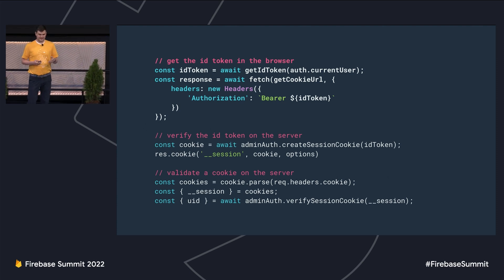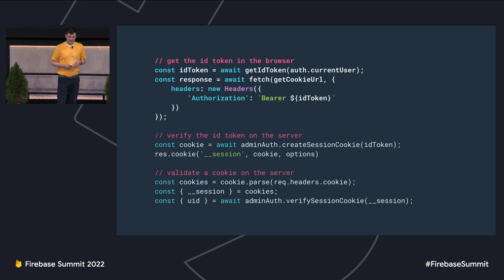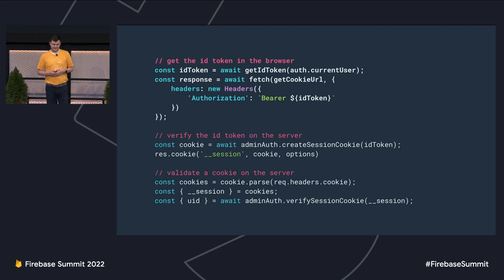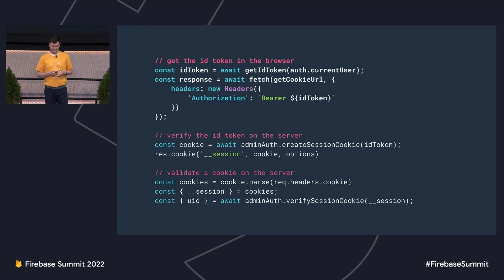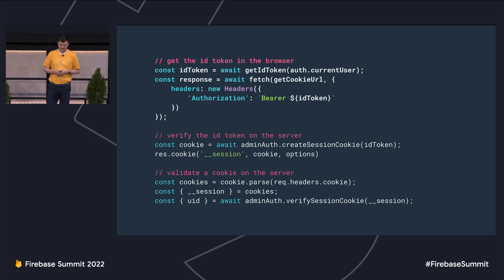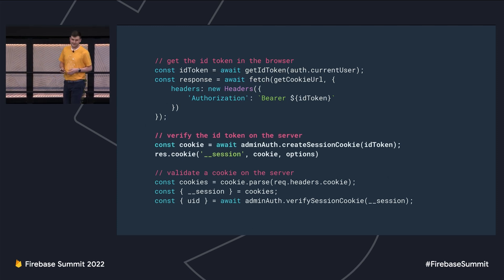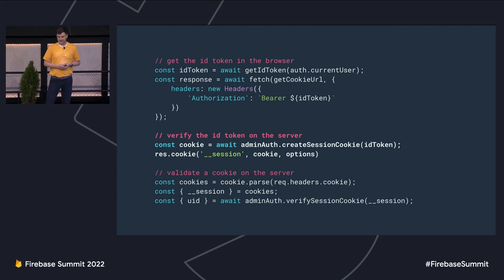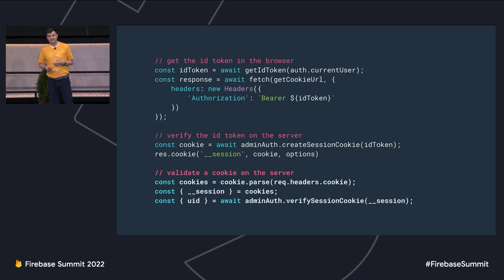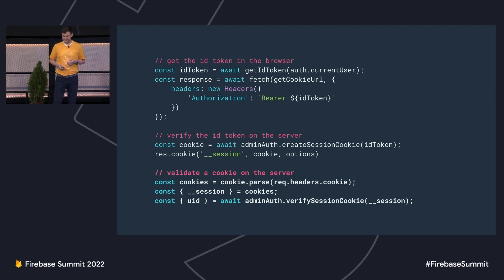Here's a quick look at how it would look to implement this. When the user first signs in on the sign-in page in the browser, we'll call the Firebase client SDK's getIdToken function. Then, just like before with our bearer token flow, we'll fetch against a special URL on our server — getCookieURL in my example — and send a request with an authorization header. The server will respond with a cookie by calling the Admin SDK's createSessionCookie method and then attach that cookie to its response. Then, on every subsequent page request when the browser does send along a cookie, we can parse the cookie and call the Admin SDK's verifySessionCookie function to make sure the cookie is real and get information about the user.